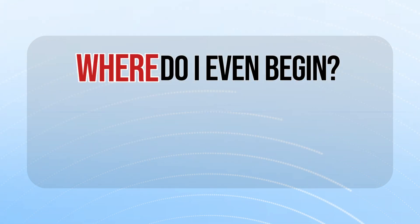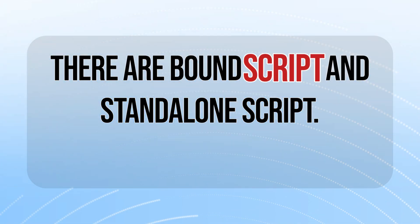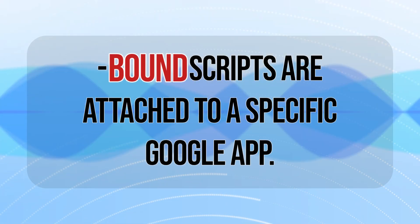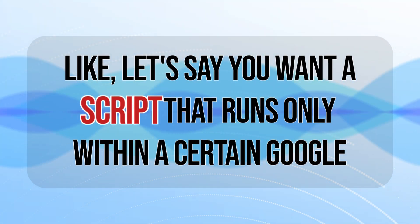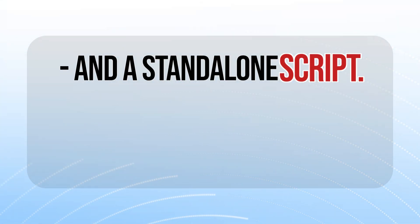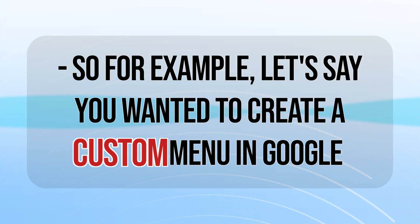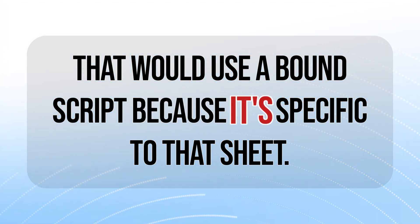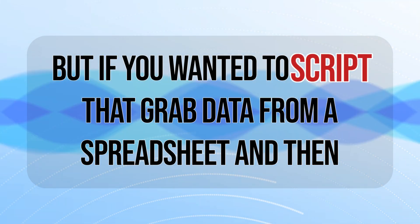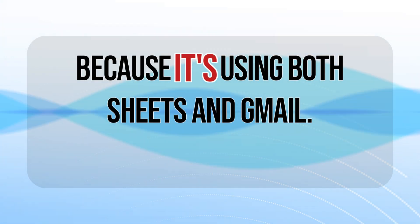So let's say I want to get started — where do I even begin? First you need to understand the different types of GAS scripts: bound scripts and standalone scripts. Bound scripts are attached to a specific Google app — for example, a script that runs only within a certain Google Sheet. A standalone script can access multiple Google services. For instance, if you want a script that grabs data from a spreadsheet and sends you an email with that data, that would be standalone because it uses both Sheets and Gmail.